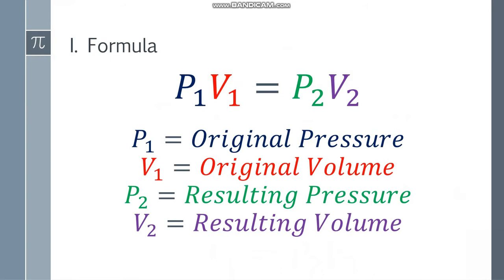The formula we're going to use here is P1V1 is equal to P2V2. We're only going to have pressure and volume. P1 will be the original pressure, V1 will be the original volume, and P2 will be the resulting pressure. And lastly, V2 will be the resulting volume. So, original and resulting.